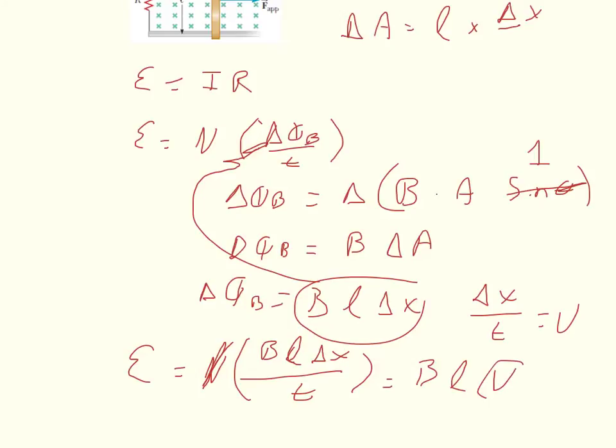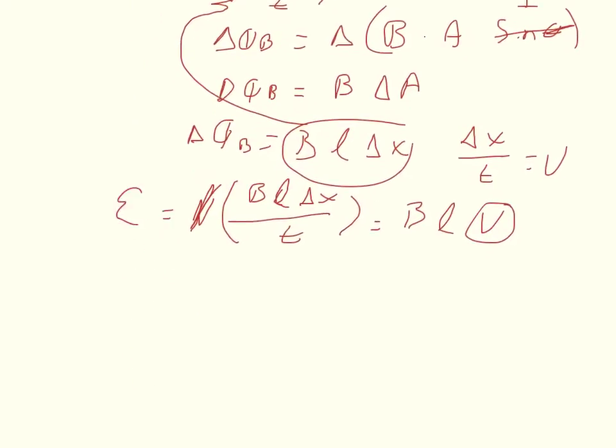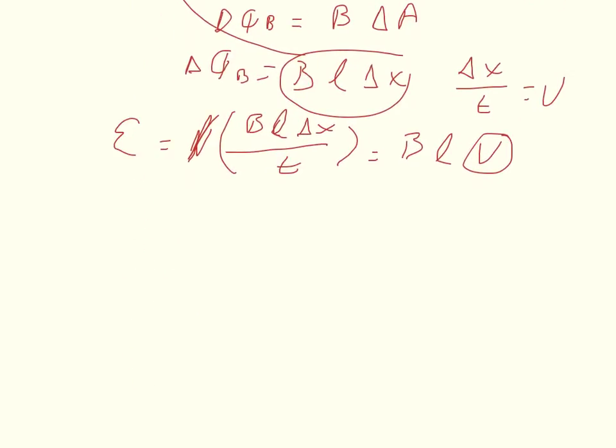And we want to solve for the velocity. How fast does it have to move? So what we'll do is we'll divide by B L, so we get the EMF over the magnetic field times the length is equal to the velocity. Now I know what this variable is and this variable is, but I don't have, they didn't give me EMF.